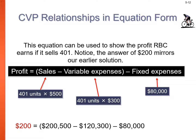When sales are 401 bikes × $500 sale price, subtract variable expenses of 401 × $300, minus fixed expenses of $80,000, profit is $200. We've translated the contribution income statement into a formula, and we'll keep refining it to show how profit is affected if sale price, costs, or volume change.